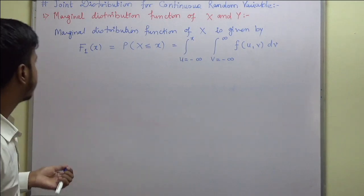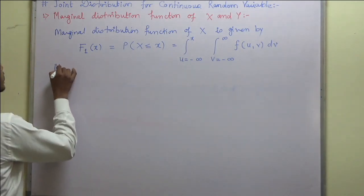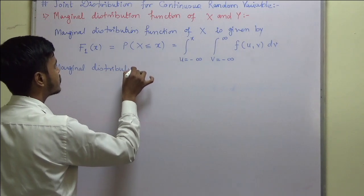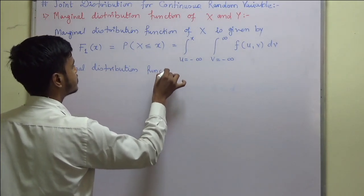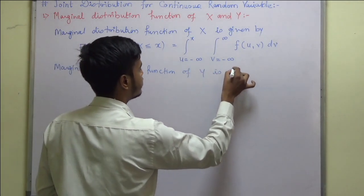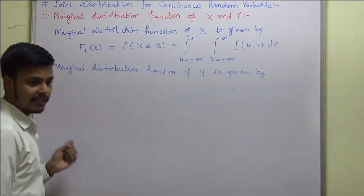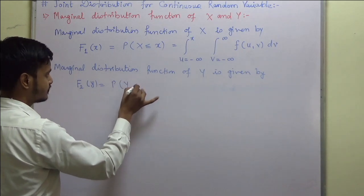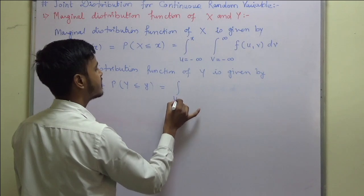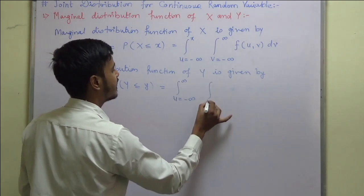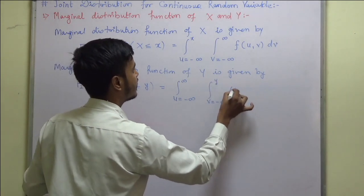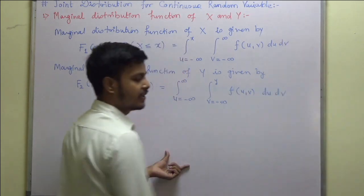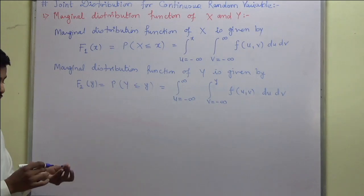Similarly, the marginal distribution function of y, denoted F₂(y), which is the probability that Y is less than or equal to y, is given by the integration from u equals minus infinity to infinity, and v from minus infinity to y, of f(u, v) du dv. This is how we define the marginal distribution functions of x and y.